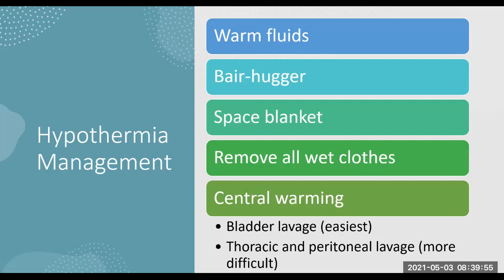Other central warming methods include thoracic and peritoneal lavage. Thoracic lavage involves inserting IC drains into the patient - the problem is the patient doesn't actually have a lung injury, so you must be extremely careful, sweeping the area once you get in, moving the lung completely out of the way, then instilling the IC drain. You then instill warmed water into the thoracic cavity and allow it to drain out, repeating with about 500 mils at a time. The risk is high potential for injury - cardiac injury if not careful, and lung injury potentially causing pneumothorax or hemothorax on top of the hypothermia.